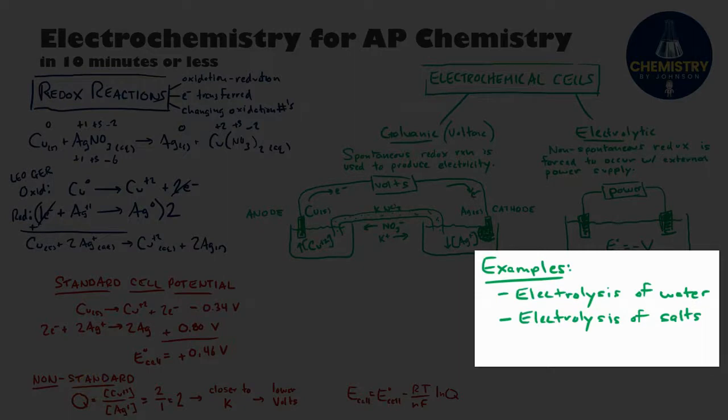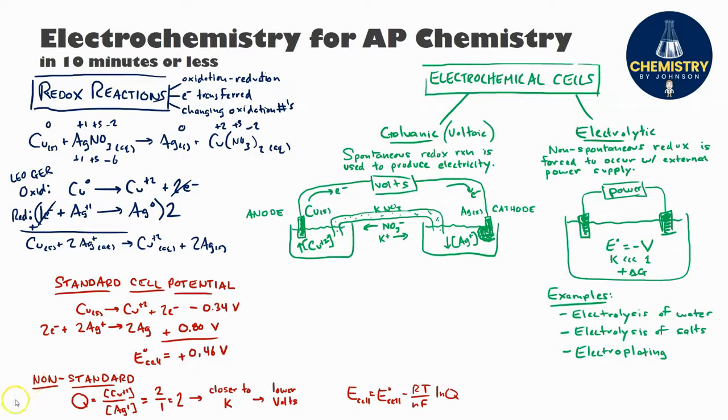Some common examples might include the electrolysis of water, where H2O molecules are split into H2 and O2 gas, the electrolysis of salts—those salts typically have to be molten or dissolved in water—or electroplating, where aqueous metallic ions are used to coat an object that's placed in the solution functioning as the electrode.